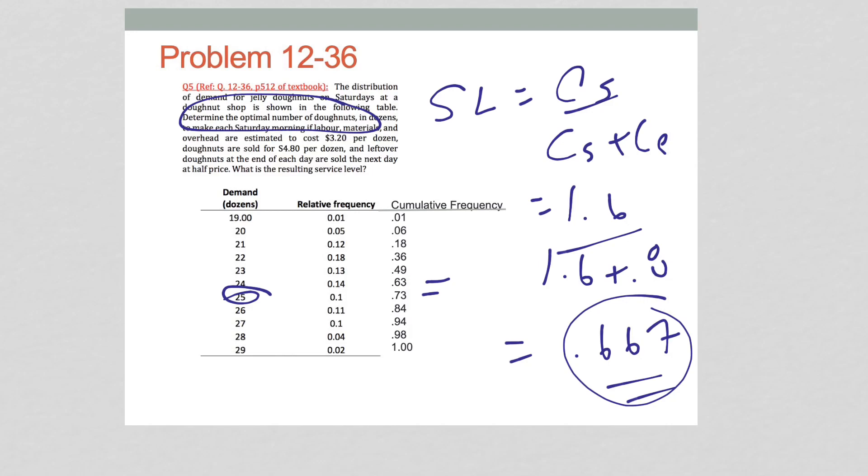The second question is, what is the resulting service level? The resulting service level is 0.73. Why? Because 0.667 is the service level we get from these values. But remember, these values do not correspond exactly with 25. The process is we calculate our service level from the values. We find the probability, right here, from the cumulative frequency that just exceeds the service level. In this case, it was 0.73. The corresponding demand was 25. That's our answer. The resulting service level is 0.73.